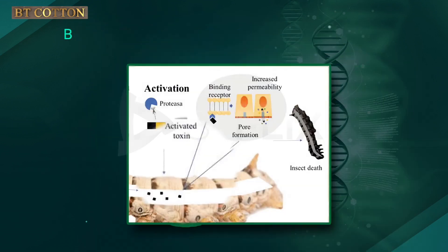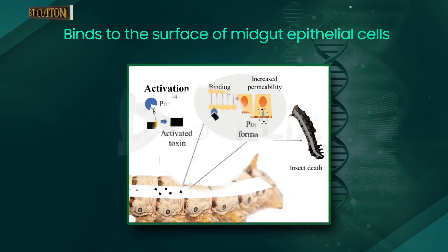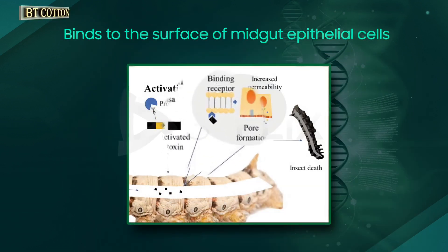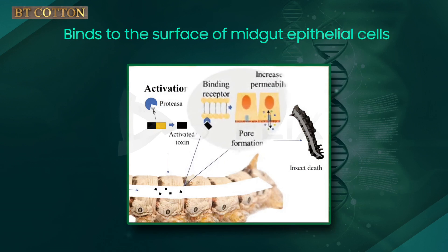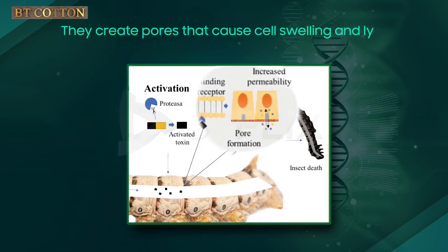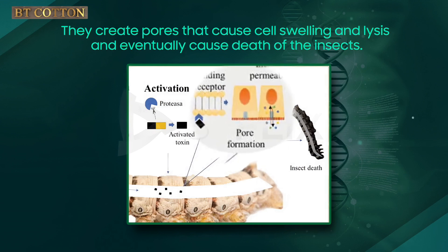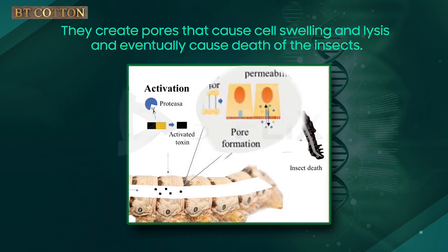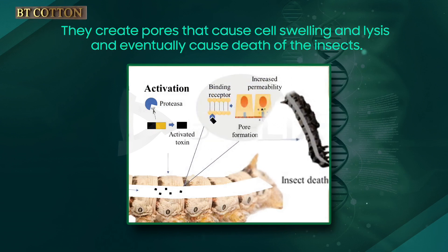The activated toxin binds to the surface of mid-gut epithelial cells. They create pores that cause cell swelling and lysis, and eventually cause the death of the insect.